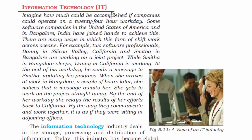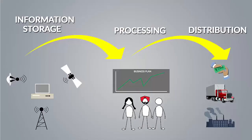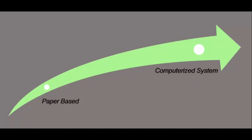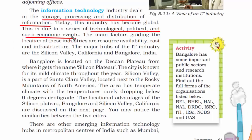The last topic is information technology. The work of information technology is nothing but storing, processing, and distributing information. IT is a support service where, with the help of information, they provide services and create businesses. The reason behind its expansion is because of technological, political, and socio-economic events. Every country wants to be modern, which means being technologically advanced. Politically, a lot of jobs are being outsourced from developed countries to developing countries, creating great revenue and increasing the socio-economic factor. The factors affecting location of these industries are availability of resources, cost, and infrastructure. The major hubs of IT industry are Silicon Valley, California, and Bangalore in India.